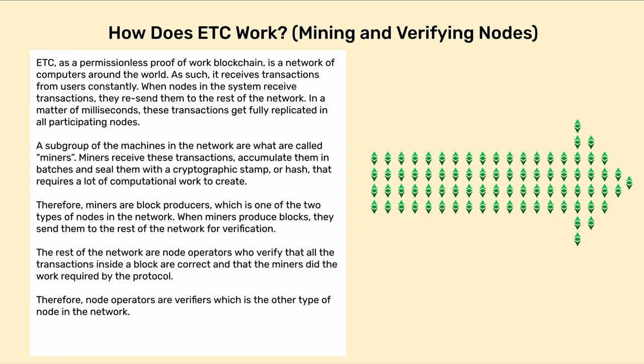How does ETC work? Mining and Verifying Nodes. ETC, as a Permissionless Proof-of-Work Blockchain, is a network of computers around the world. As such, it receives transactions from users constantly. When nodes in the system receive transactions, they re-send them to the rest of the network. In a matter of milliseconds, these transactions get fully replicated in all participating nodes.